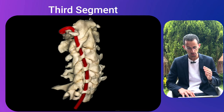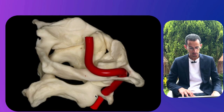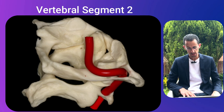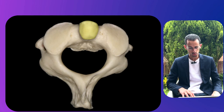Once the artery passes through the transverse foramen of C2, it becomes the third segment. The fourth segment begins once the artery pierces the dura and meets the contralateral vertebral artery to form the basilar artery, which supplies the posterior circulation. In this picture we can see the facet joint, the lamina, the odontoid process of C2, the spinous process, and the transverse process of C2.